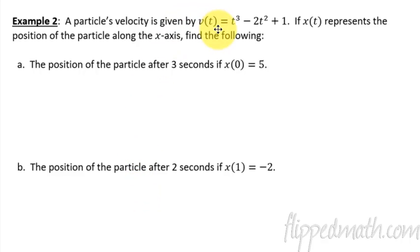Example two, particle's velocity is given by blah, blah, blah. If X of t represents the position of the particle along the x-axis, find the following. So we're going to find the position of the particle after three seconds. So if we want to know after three seconds, we need to know how far it has traveled in those three seconds. So set this up like this. We're going to go from 0 to 3 of V of t. In this case, because we're going to do it by hand, let's go t cubed minus 2t squared plus 1 with respect to t.